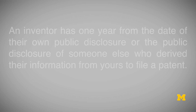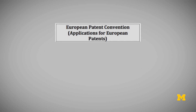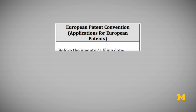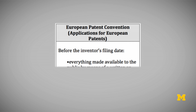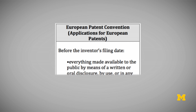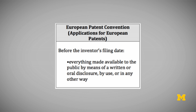Lastly, let's look at the law in Europe under the European Patent Convention. It says that prior art includes information that exists before the inventor's filing date and includes everything made available to the public by means of a written or oral disclosure, by use, or in any other way. So this broadly includes any type of public information that exists in any way prior to the inventor's filing date.